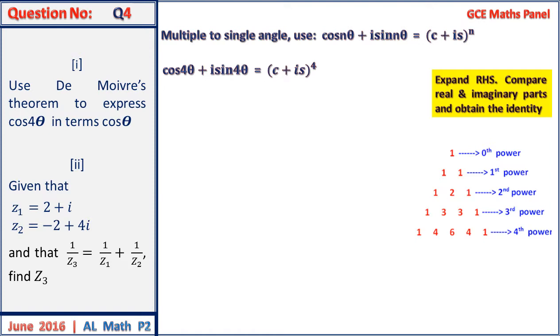Using Pascal's triangle, we have to the power 4, so we use the bottom and this gives us cos⁴θ plus 4cos³θ·i·sinθ plus 6cos²θ·(i·sinθ)² plus 4cosθ·(i·sinθ)³ plus (i·sinθ)⁴.